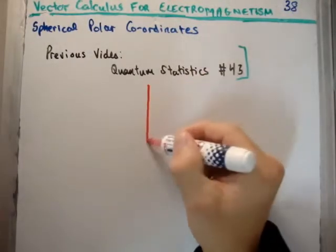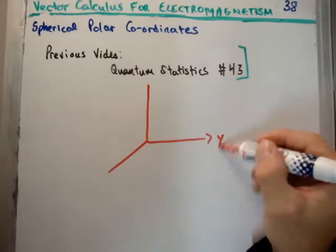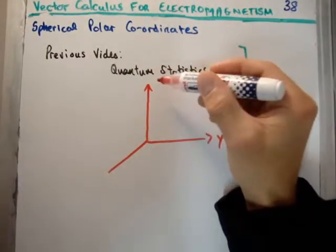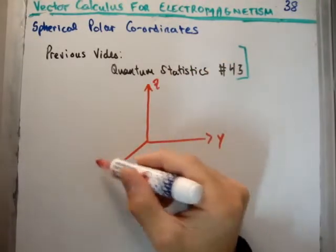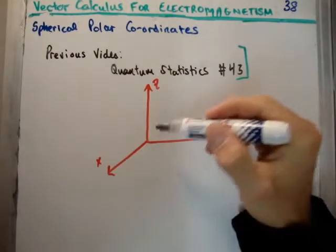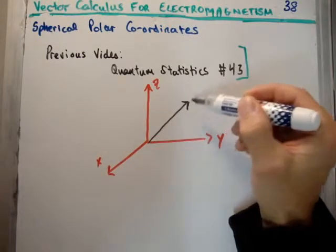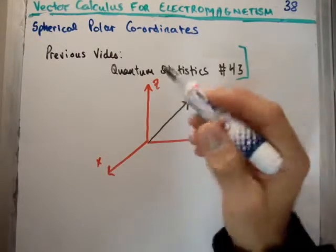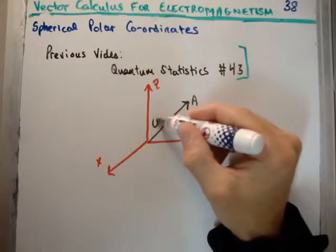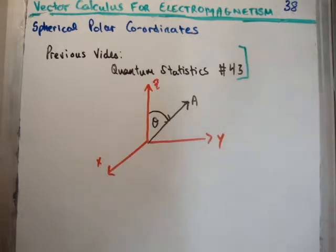So if we can imagine our rectangular coordinate system where we have i, j, and k, or x, y, and z. Let's say this is y, this is z, and this is x. So if we have our vector going to a point here, there's our vector. Let's call it point A. Well, we call this angle here theta. So this angle between the z axis and your vector, we call that theta.